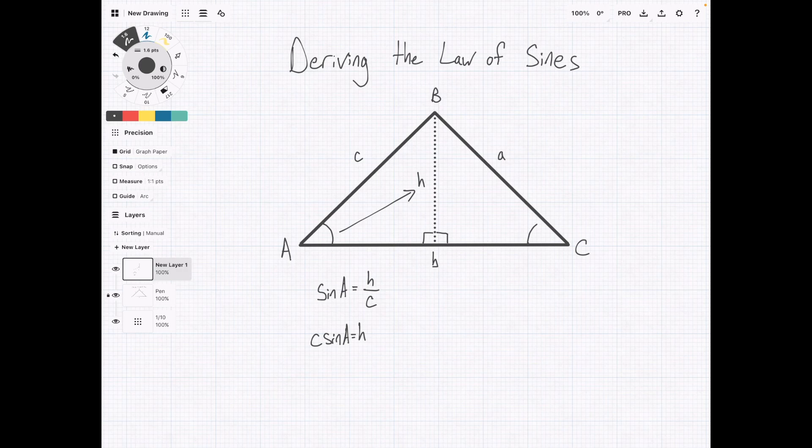Step two is to do the same thing on the other side. Sine of C equals opposite, again that's H, over hypotenuse, A. Multiply the A across, we have A sine C equals H.